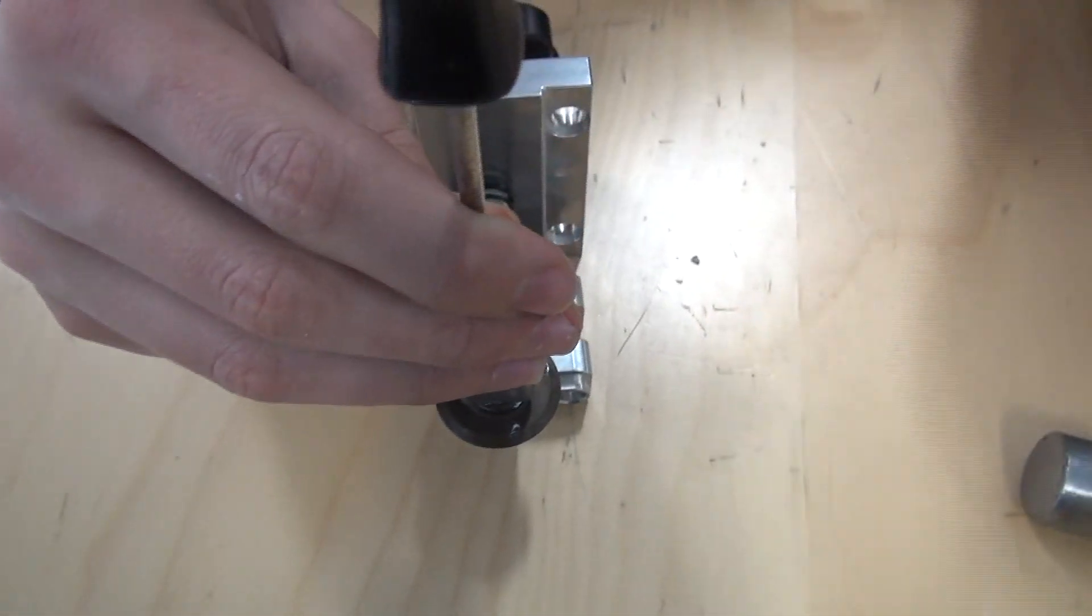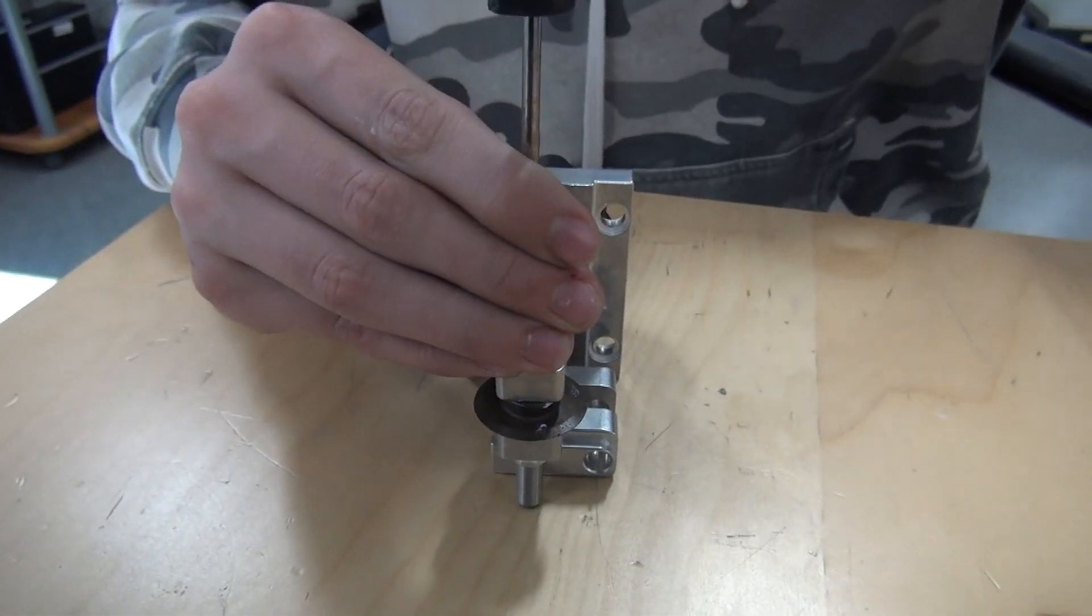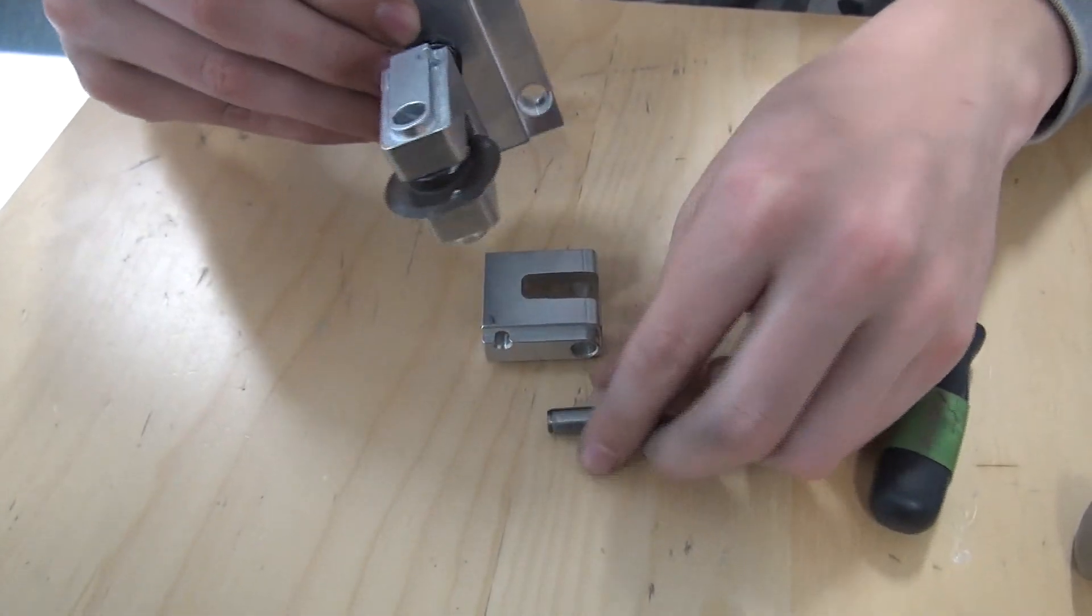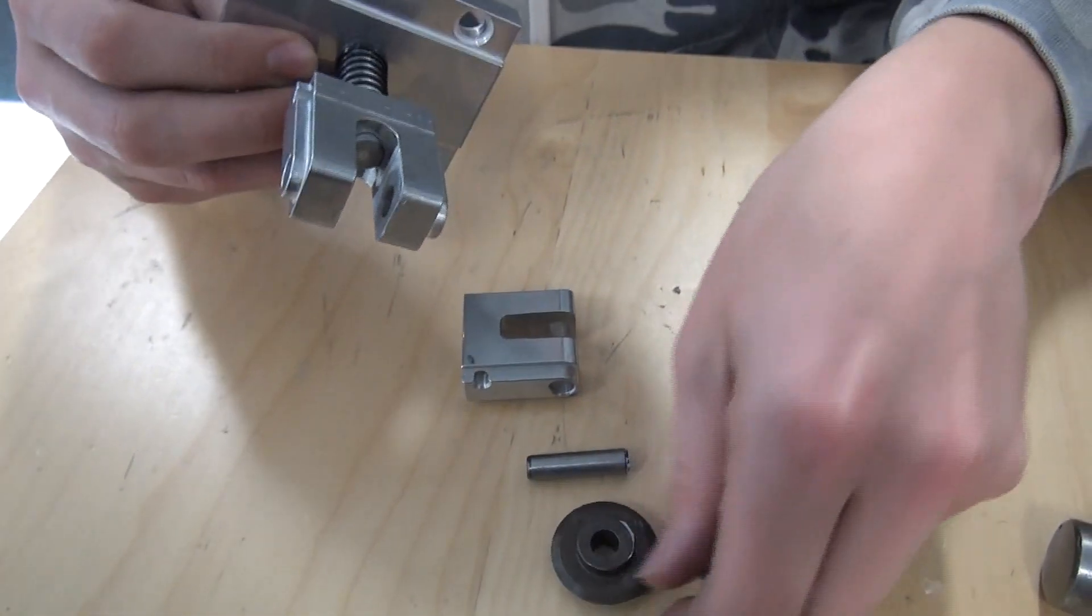You're going to take something such as a screwdriver to get in there and you're going to take a hammer, and you're going to push that pin out. That pin is going to fall out and you can take your knife out.